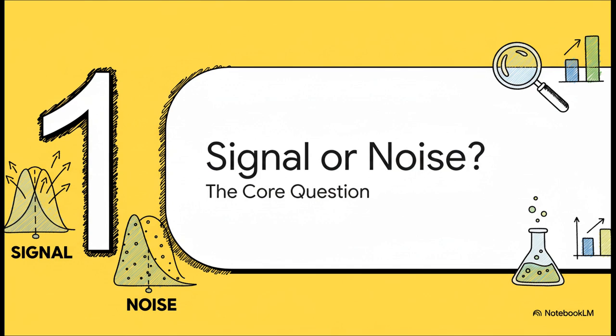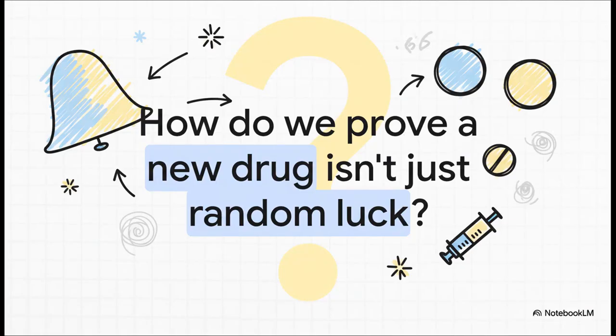Is the pill creating a real, measurable effect, what scientists call a signal? Or are the results just random variations, what they call noise? And that right there, that's the million-dollar question in pretty much all of medical research. Without a reliable way to answer it, we're all just guessing. Every new treatment, every public health guideline, it all faces this exact same fundamental challenge, separating a real impact from all that statistical static.